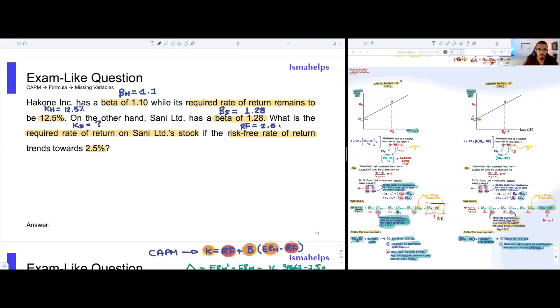We also know that the beta of Sani is going to be 1.28, and we're asking what is the required rate of return for Sani if we know that the risk-free rate of return is equal to 2.5%. So we got a lot of information, but we also don't have all the information out there.